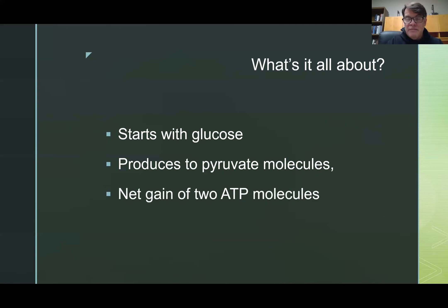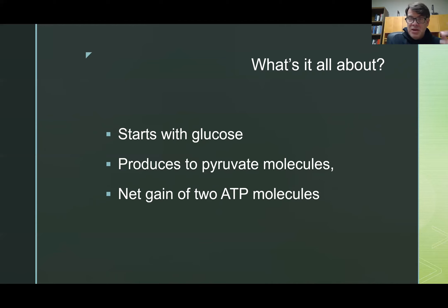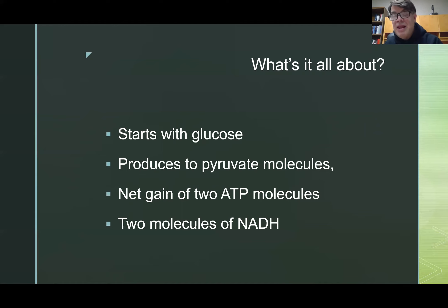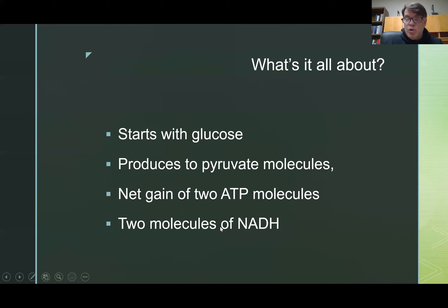Glycolysis will have a net gain of two adenosine triphosphate molecules. The process actually produces four, but it takes two — the first half of glycolysis requires two ATPs to get it going, but it'll generate four ATPs in the second half, leaving a net gain of two ATP molecules. It will also end with two molecules of NADH, which is the reduced form of NAD+, the H being a hydrogen. These are the coinage of energy in the cell.